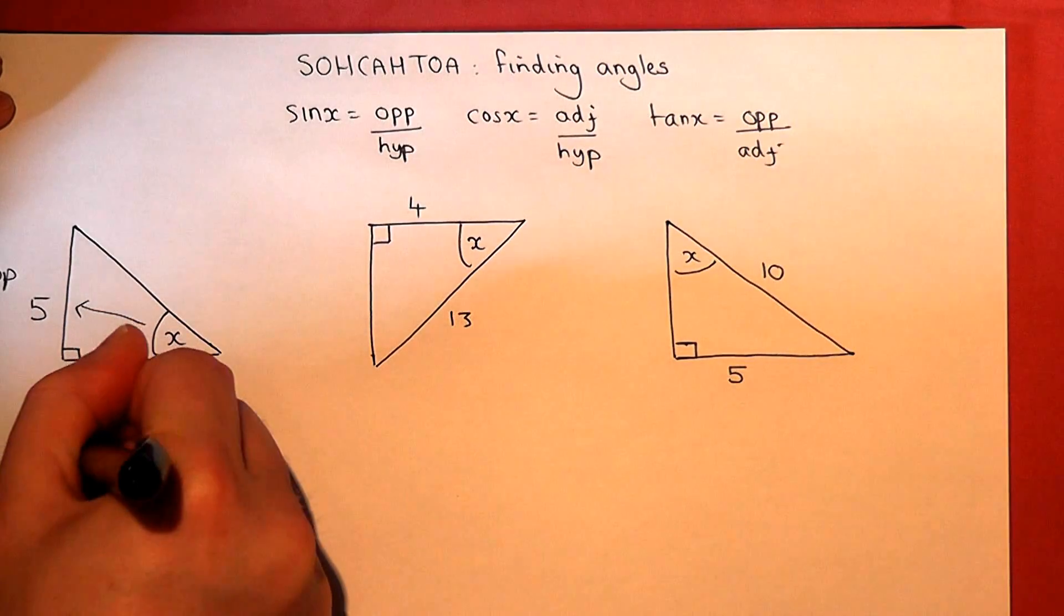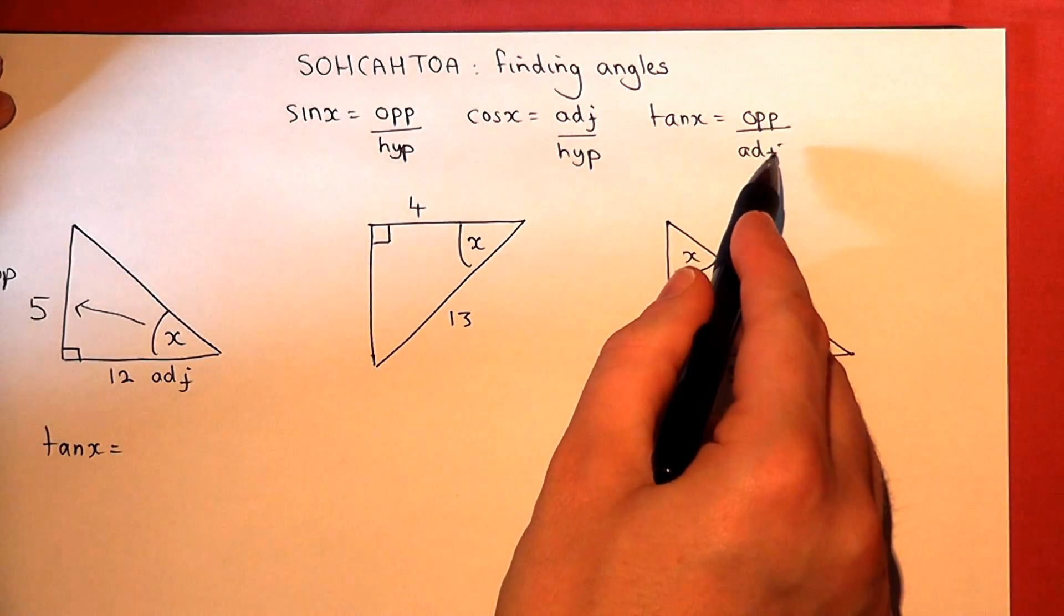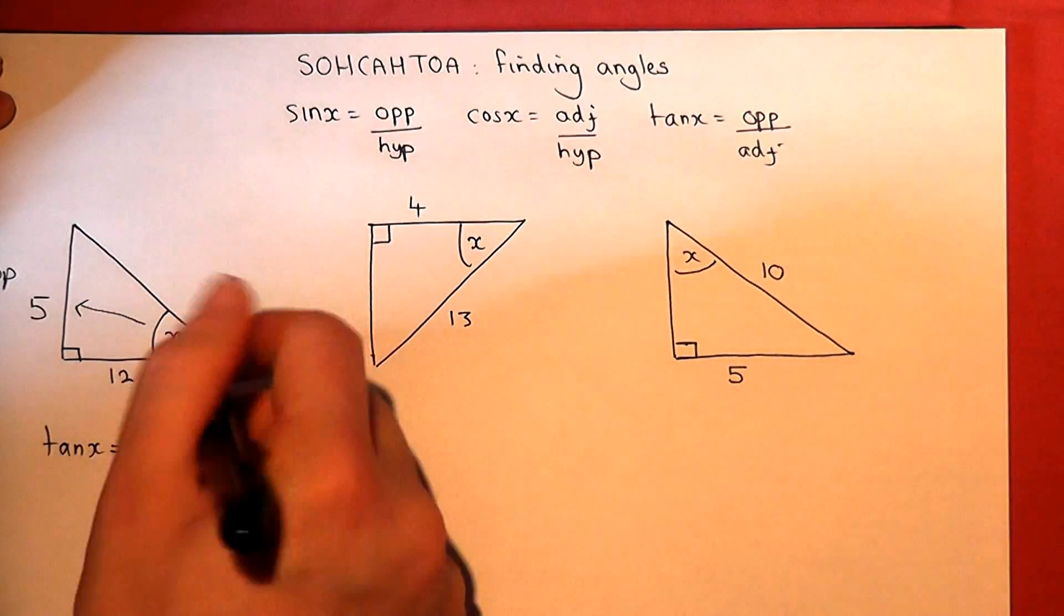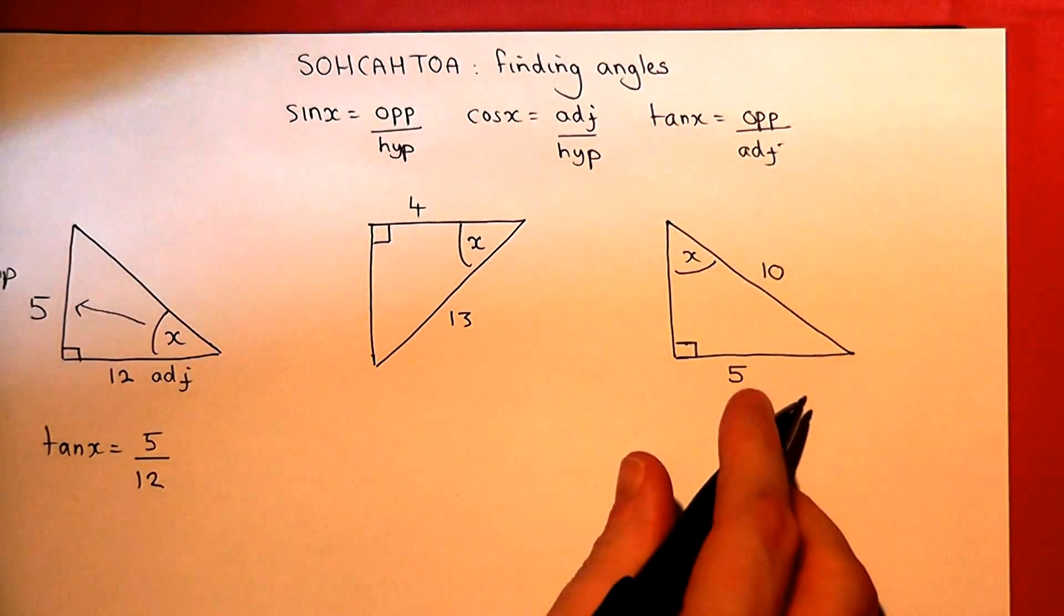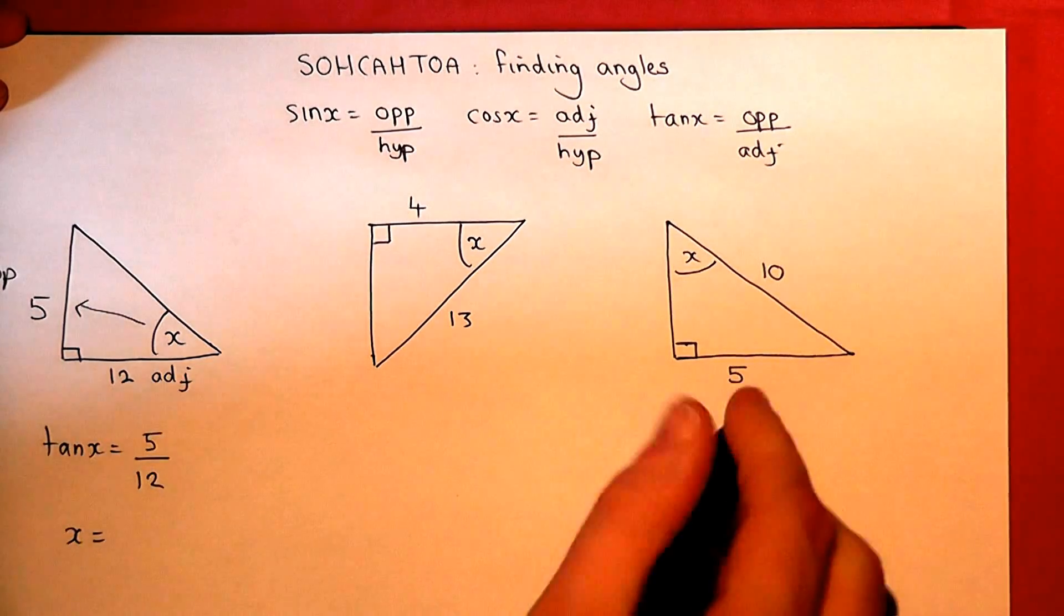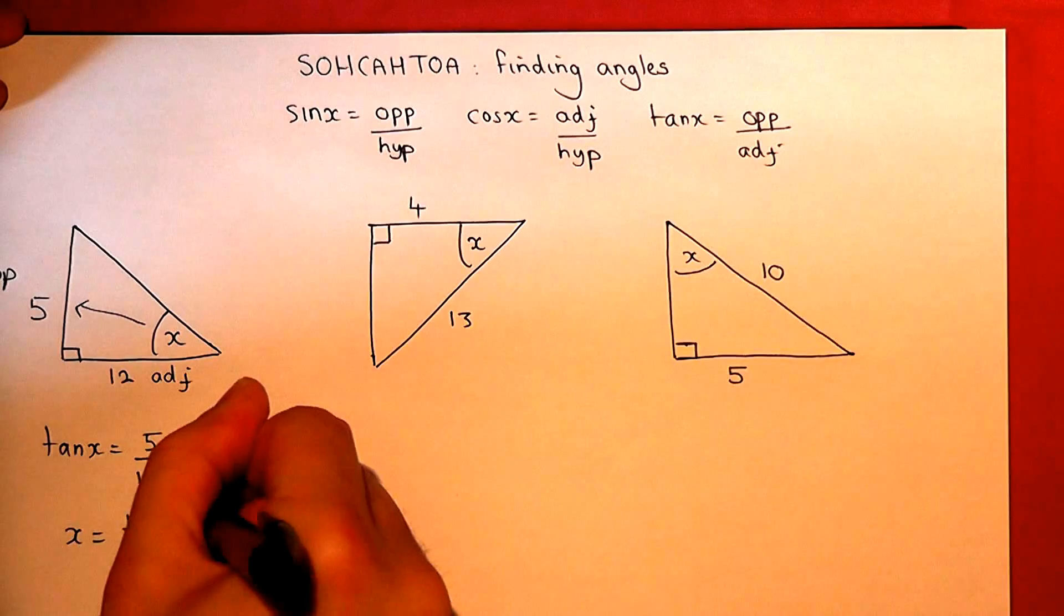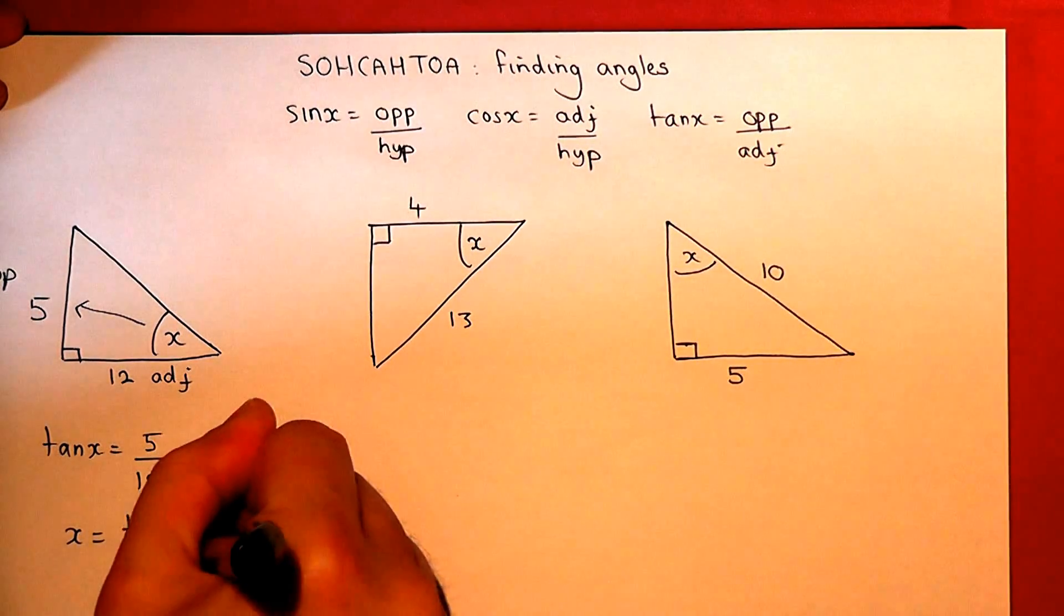So tan of x is equal to opposite over adjacent. Opposite over adjacent, or five twelfths. Then, to find out x, we have to do the inverse tangent function, or shift tan on the calculator.